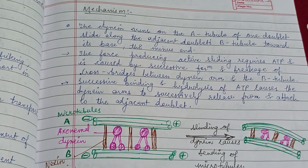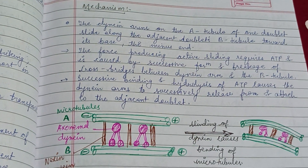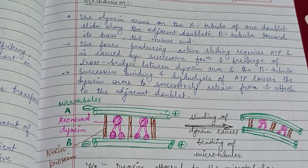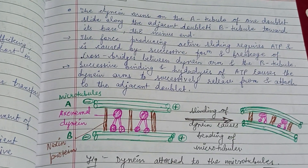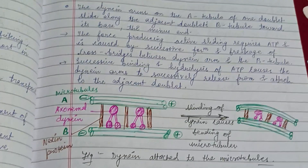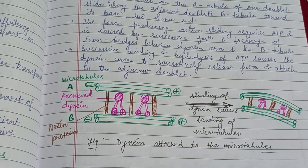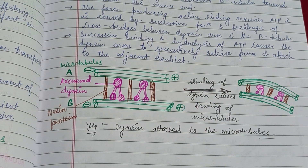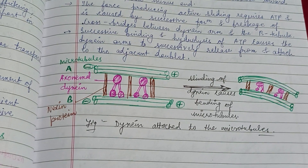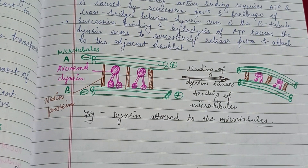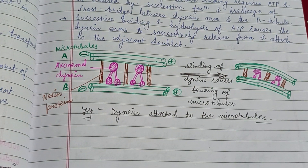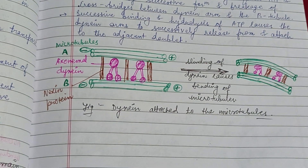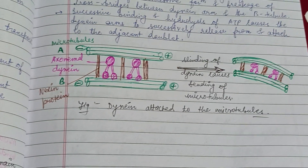Regarding the mechanism of kinesin and dynein: dynein runs on the A-tubule of one doublet and slides along the adjacent doublet B-tubule towards its minus end. The force producing the active sliding requires ATP and is caused by the successive formation and breakage of cross-bridges between the dynein arm and the B-tubule. Successive binding and hydrolysis of ATP causes the dynein arm to repeatedly release from and attach to the adjacent doublet.